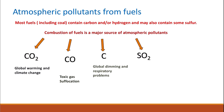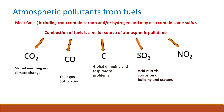Because of the presence of sulfur in fuel, combustion can produce sulfur dioxide through the reaction between sulfur and oxygen from the atmosphere. Sulfur dioxide is responsible for the formation of acid rain, which causes corrosion of buildings and statues.